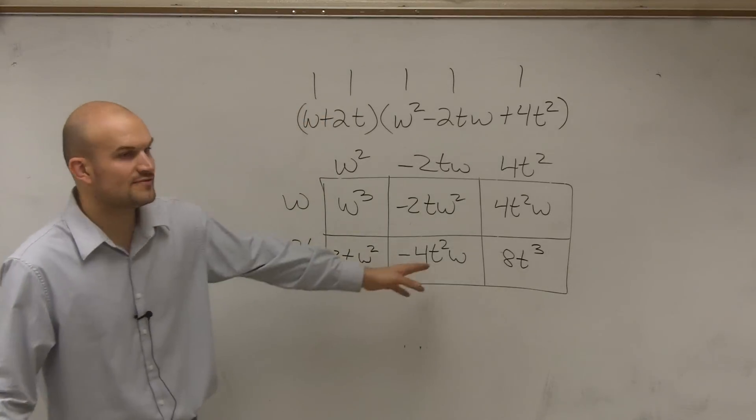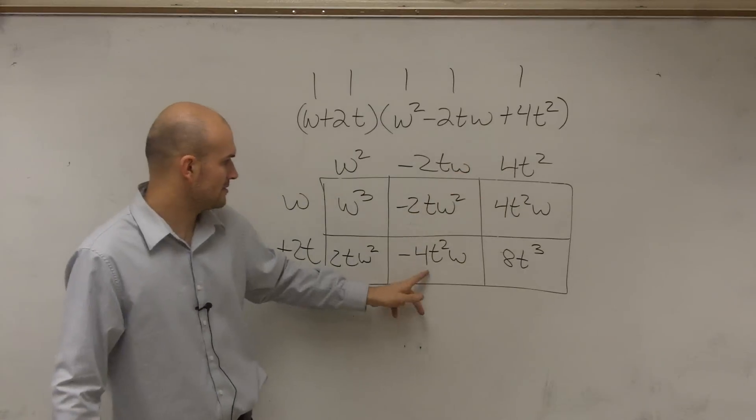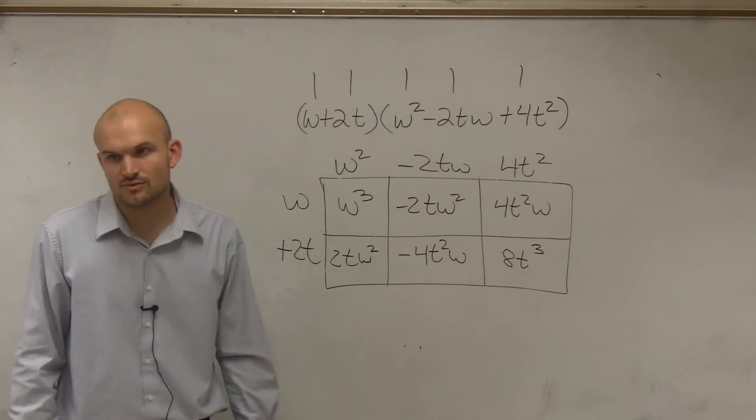So all I did was for each box, I just took the length times the width. Length times width. Length times width. Length times width. And I found the area of each one.